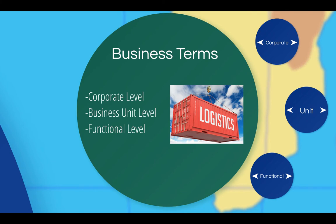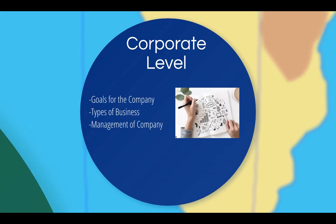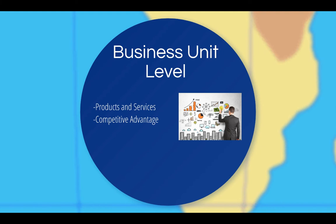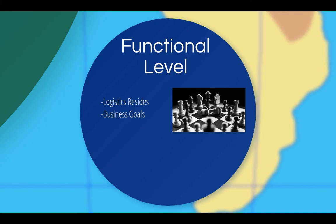In business terms, strategy can be formulated at a corporate level, a business unit level, and a functional level. Corporate level strategy is focused on determining the goals for the company, the types of business in which the company should compete, and the way in which the company will be managed. Strategy at a business unit level is focused on the products and services provided to customers, and on finding ways to develop and maintain a sustainable competitive advantage in the marketplace. The functional level of the organization is where logistics resides; the strategic issues at this level are related to business activities that support the achievement of the higher level goals set by the executives in the business unit and at the corporate level.